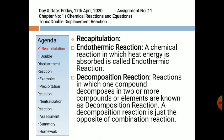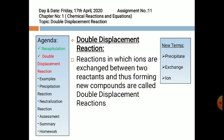Now coming to today's topic: double displacement reaction. We are having three new terms in this topic. The new terms are precipitate, exchange, and ion. Now what is precipitate? Precipitate is a solid insoluble substance which is formed after a chemical reaction. That is, one of the products is in solid form and we obtain it at the bottom of the beaker or flask in which the reaction is taking place.